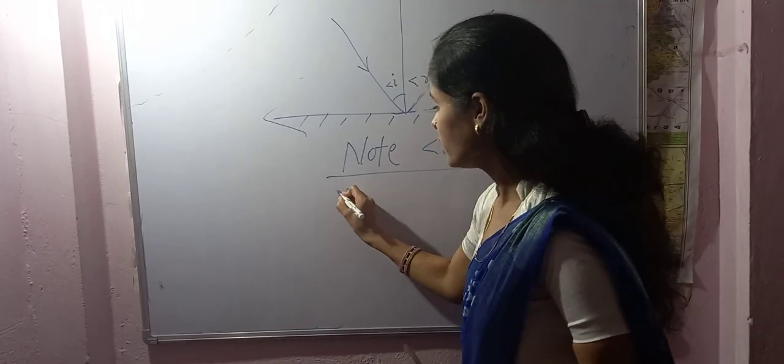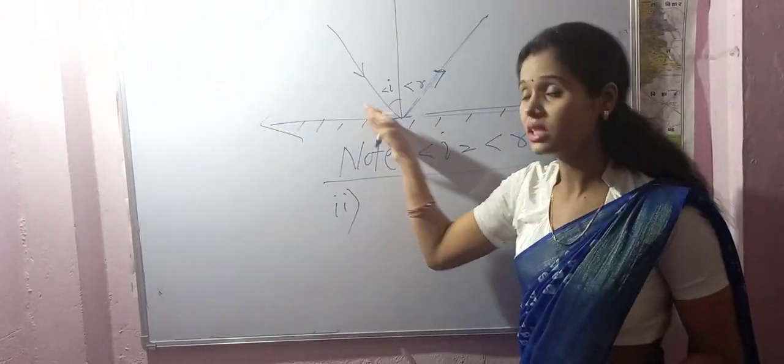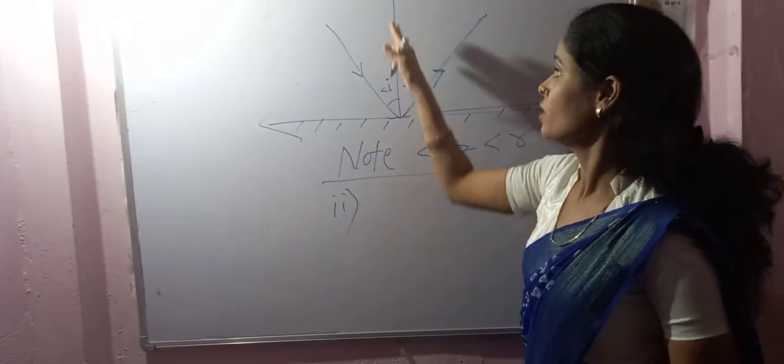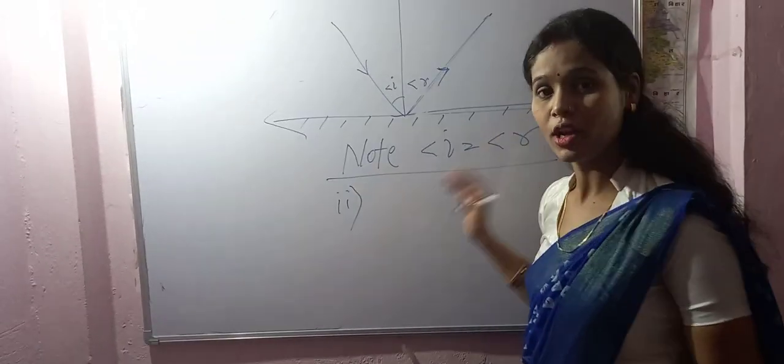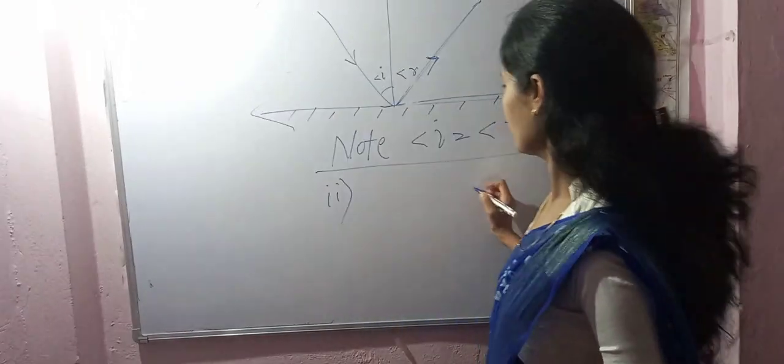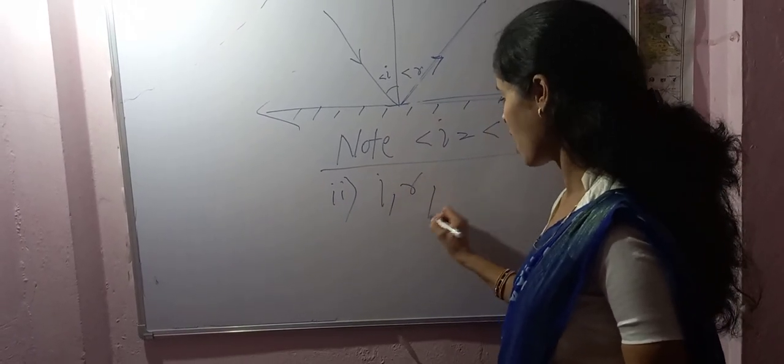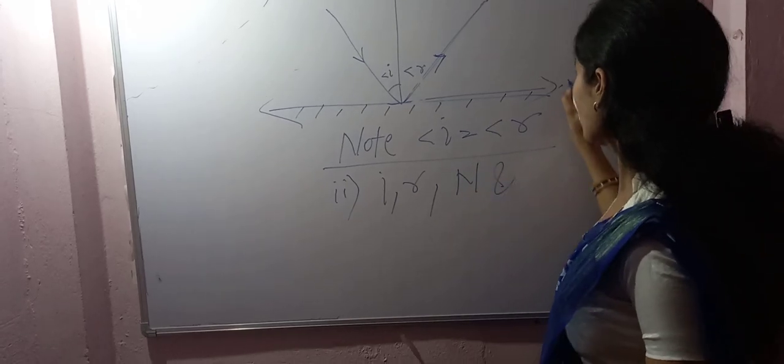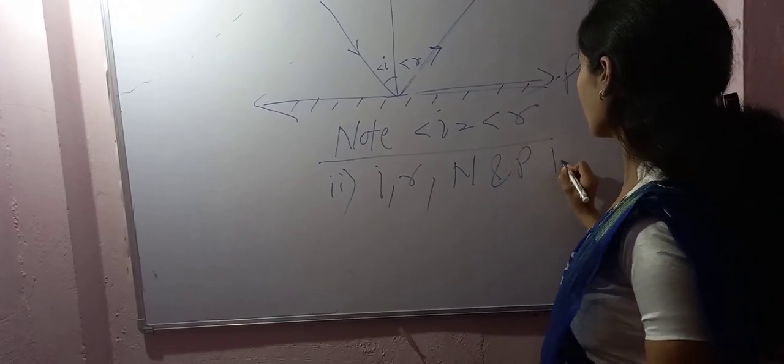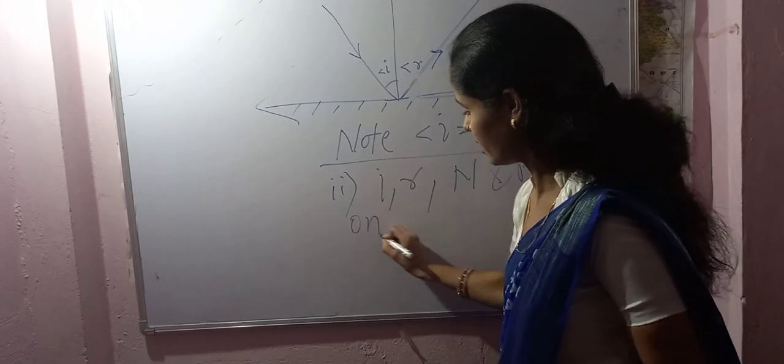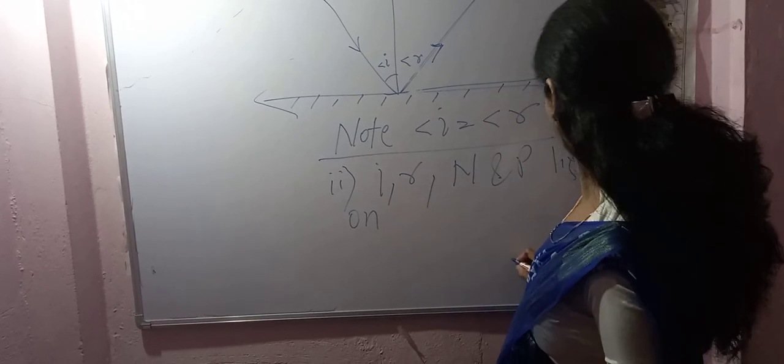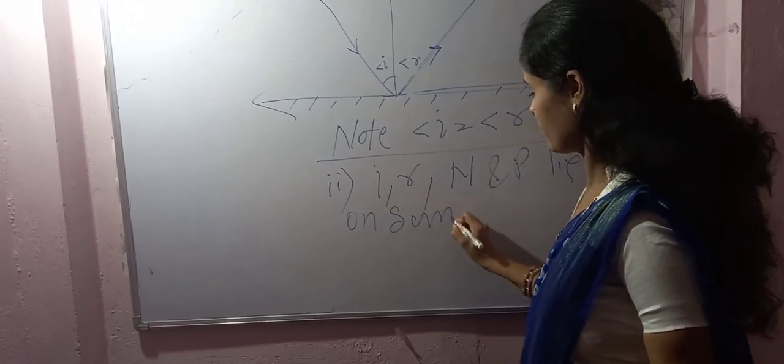Second point. Ray of incidence, ray of reflection, normal and plane all lie on the same plane. That is, I, R, N and P lie on the same plane.